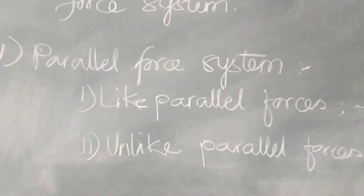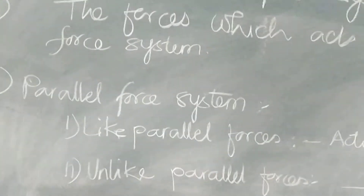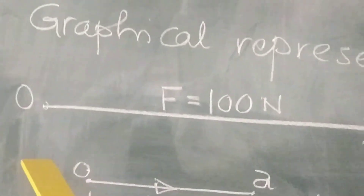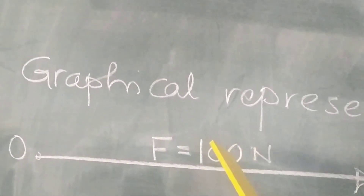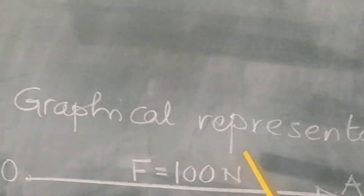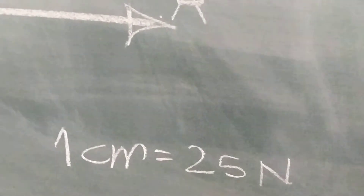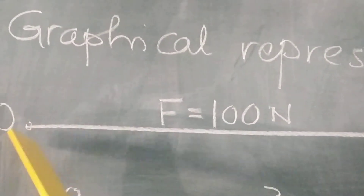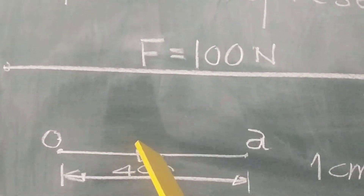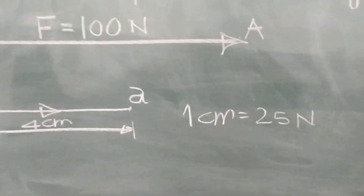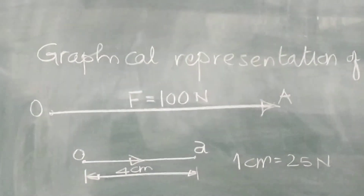Now, how to represent force graphically. We know that force is a vector quantity having magnitude as well as direction. Let us consider force OA having magnitude 100 Newton and direction towards right. For the scale, let 1 centimeter equal 25 Newton. So 100 Newton would be 4 centimeters. We write force OA as small oa with direction shown and length 4 centimeters, noting that 1 centimeter equals 25 Newton. This is how we represent force graphically.